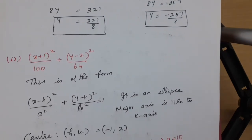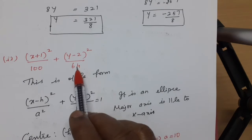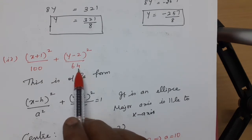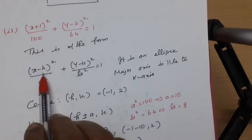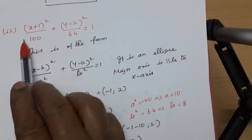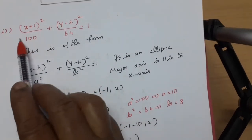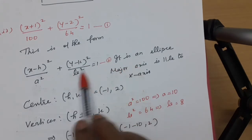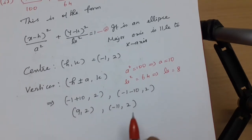Now for the second problem: (x+1) squared by 100 plus (y−2) squared by 64 equal to 1. This is of the form x minus h whole square by a square plus y minus k whole square by b square equal to 1, because the denominator of x squared (100) is the greatest value. So a squared equals 100 and b squared equals 64. This is an ellipse with major axis parallel to the X axis.